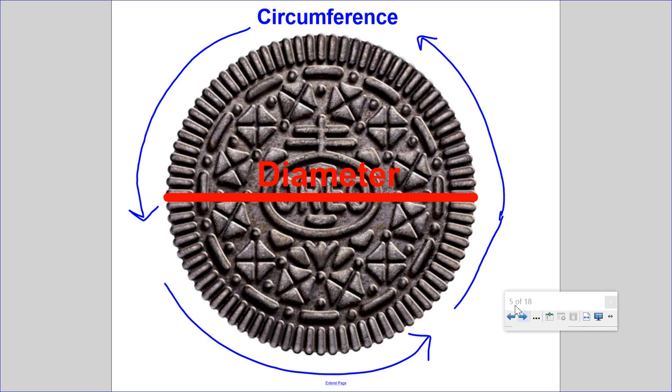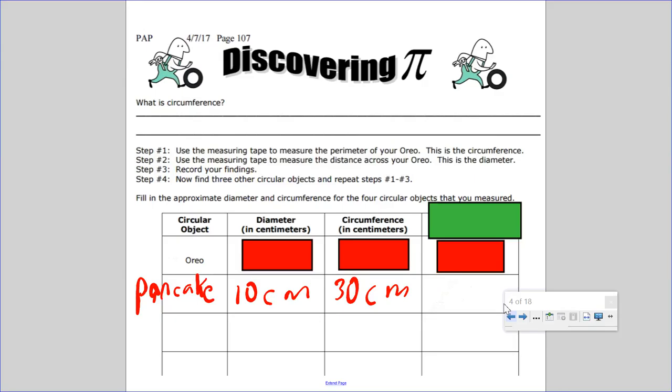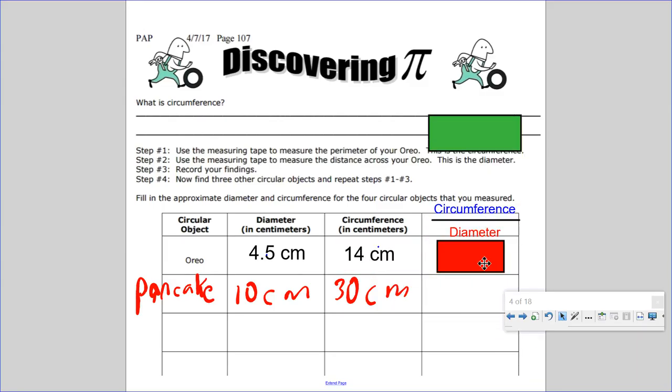So next thing, title the last column of the table circumference over diameter, rounding to the nearest hundredth. You will use a calculator to determine the approximate decimal value of the ratio for each circle. When you divide the circumference by diameter, what is the number? So let's go back here. So when I divided the circumference by the diameter, I got 3.11, which is actually really good because we know the answer is supposed to be 3.14.